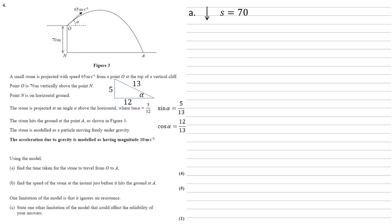So going downwards, we have a distance S of 70. Our acceleration, we're told, is 10. Our initial velocity is going to be minus because the velocity is going upwards. We're taking everything in the downwards direction.